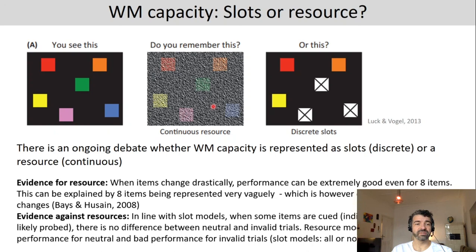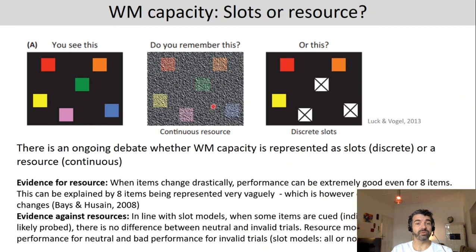There is also some evidence against resource models and in favor of slot models. When items are cued — giving participants information indicating a specific item is more likely to be probed — there is no difference between neutral and invalid trials. Resource models would predict medium performance for neutral and bad performance for invalid trials, since in slot models it's all or nothing, whereas resource models allow for something in between.